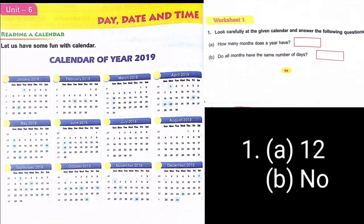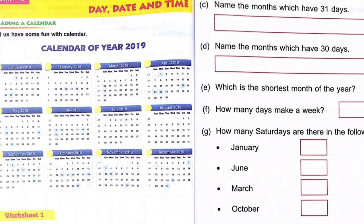Question 1: Look carefully at the given calendar and answer the following questions. (a) How many months does a year have? A year has 12 months. (b) Do all months have the same number of days? No, all months do not have the same number of days.